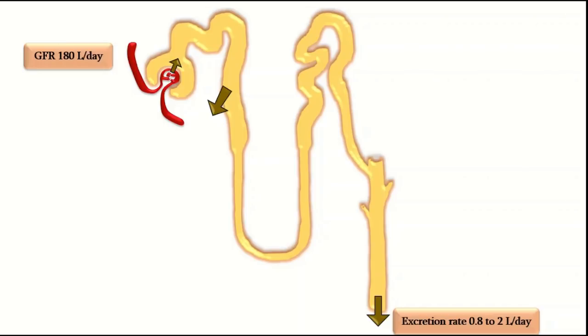Filtration is a relatively non-selective process — almost all solutes are filtered out of the glomerulus into the Bowman's capsule except for plasma proteins and cellular elements. Reabsorption, on the other hand, is a highly selective process; it involves many transport proteins and active, passive, and facilitated diffusion processes.